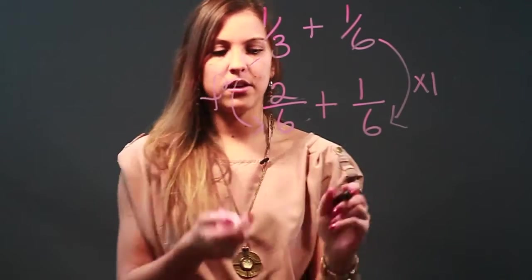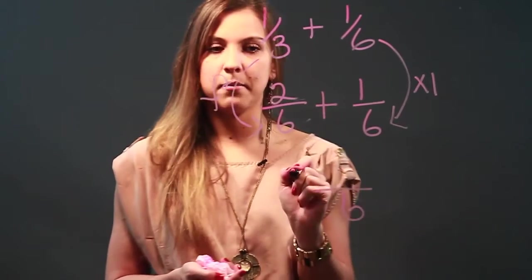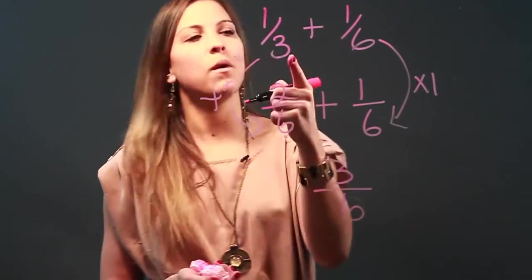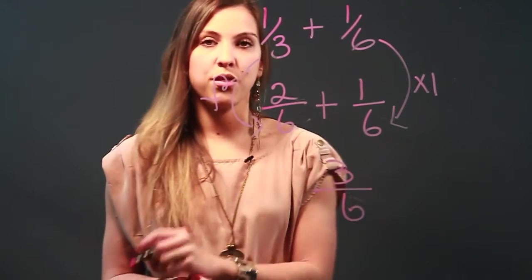Now they have the same denominator. So now I can go ahead and keep that denominator, add my numerators to get 3 over 6. So 1 third plus 1 sixth is 3 sixths.